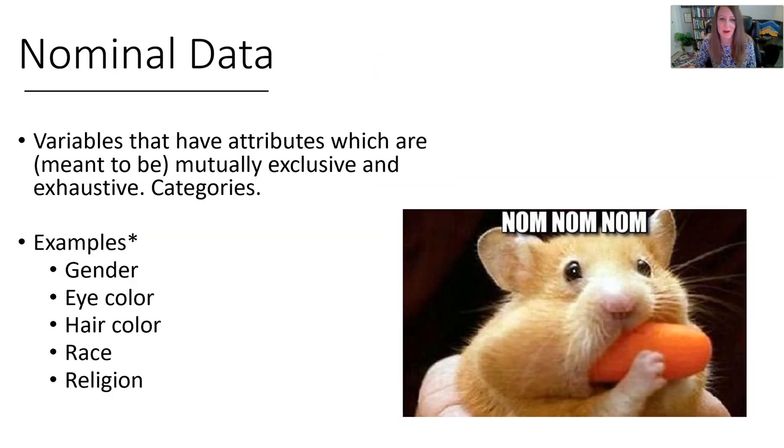We start first with nominal data. This is a variable that has attributes which are meant to be mutually exclusive and exhaustive. It's usually a category. There are some limitations and issues, but they are meant to be mutually exclusive, meaning you can only pick one answer, and exhaustive, meaning all of the possible choices are listed.